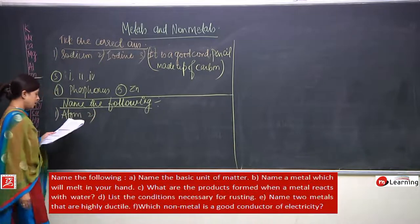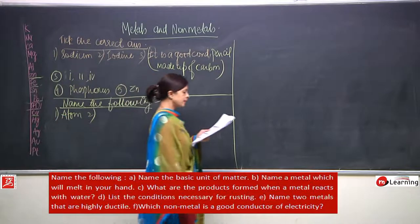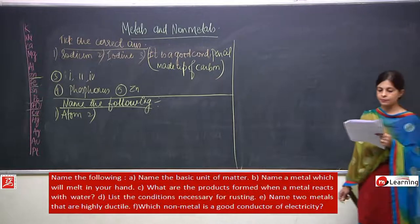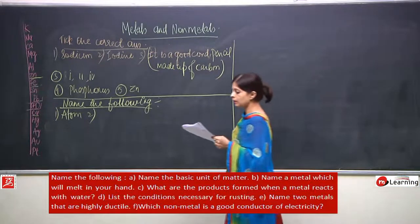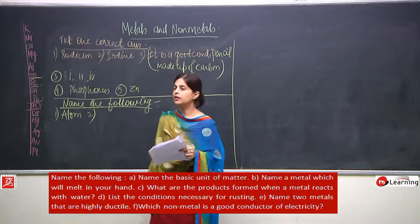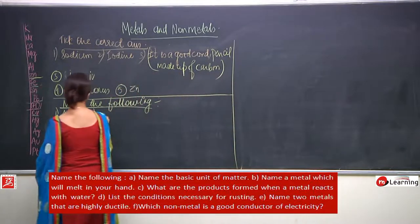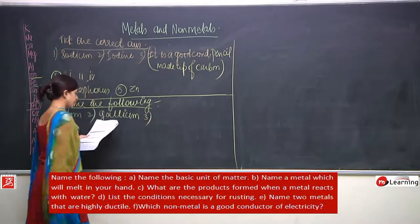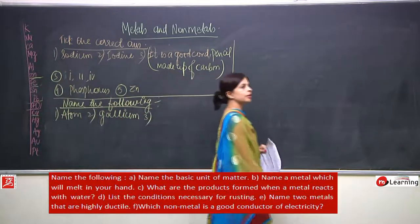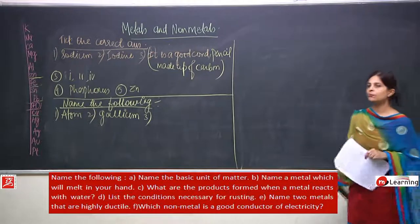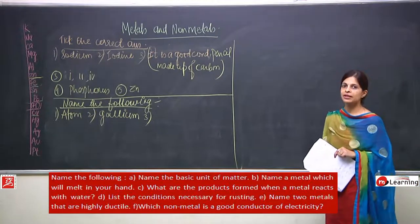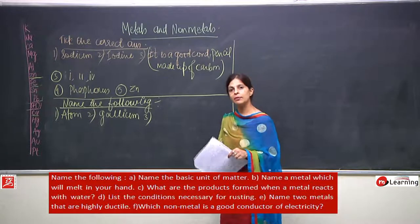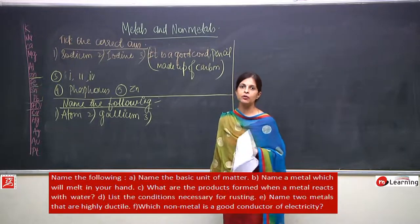Second — name a metal which will melt in your hand. Gallium is the metal which will melt in your hand. One more thing: even caesium will melt on your hand but your hand would not be there, because it is very dangerous and harmful. So gallium is the answer.